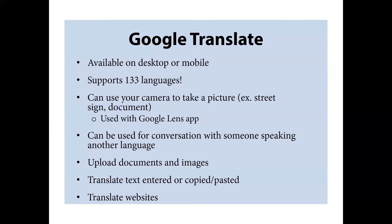Google Translate has been around for a bit and has many genealogy uses — copying and pasting text for quick translations, using the Google Lens mobile app for street signs or documents, even translating in real time when talking to someone in a different language. They support 133 languages, which is very impressive. You can also use it to translate whole websites — you may have seen Google Chrome automatically offering to translate a foreign-language site.